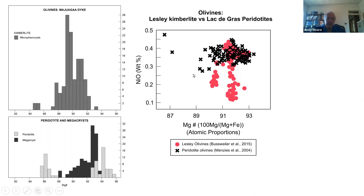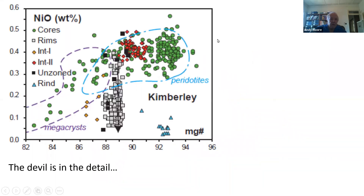At the Leslie kimberlite in Lac de Gras, you have the reverse problem. The coarse olivines from this locality show a very restricted compositional spread, while olivines from mantle peridotites at Lac de Gras show a much broader spread. So here there's a different kind of mismatch — many olivines reported from megacrysts aren't seen in the kimberlite. This broad-brush approach has a problem when you look in detail; at individual localities it doesn't hold up nearly as well.